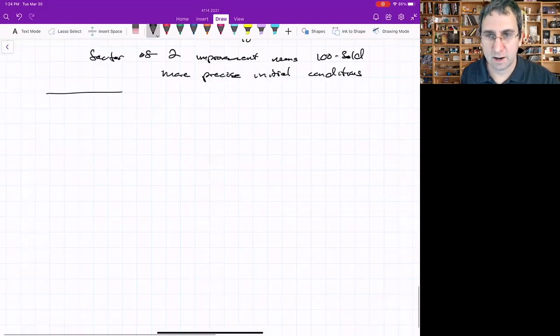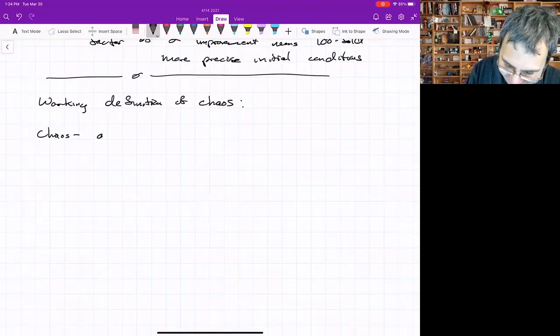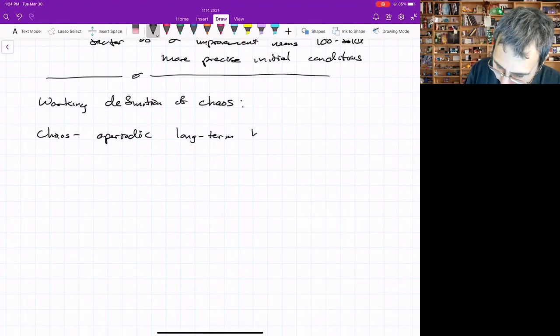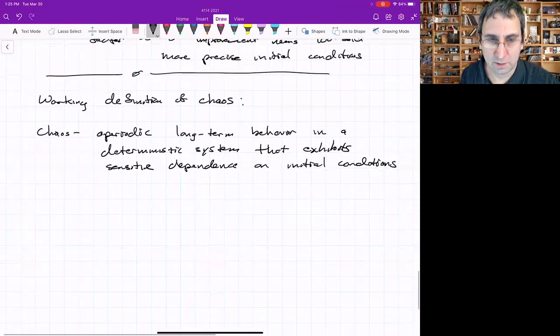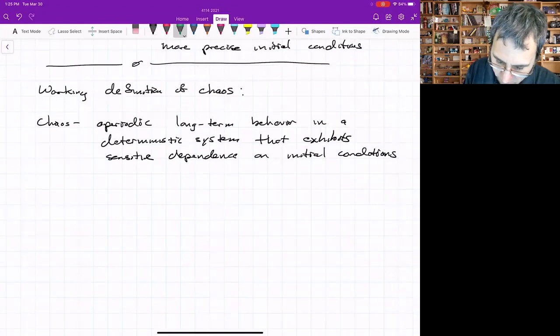We're going to define chaos. Chaos is aperiodic, long-term behavior in a deterministic system that exhibits sensitive dependence on initial conditions. This is a working definition, and there's some jargon words in there.